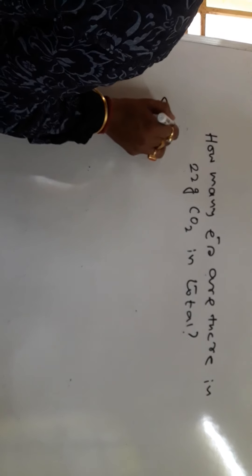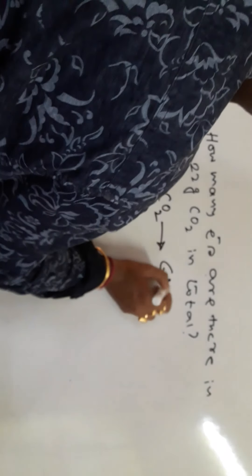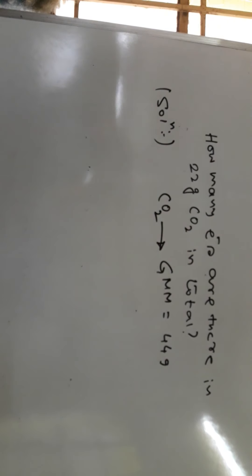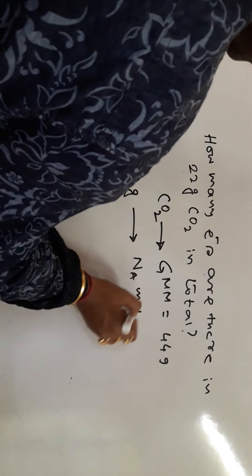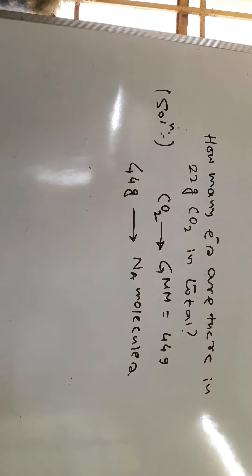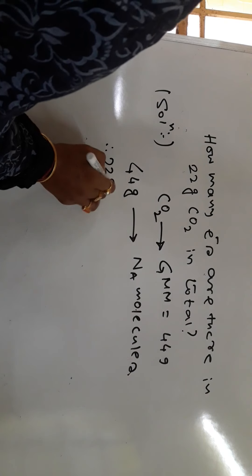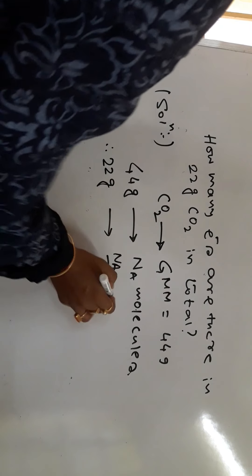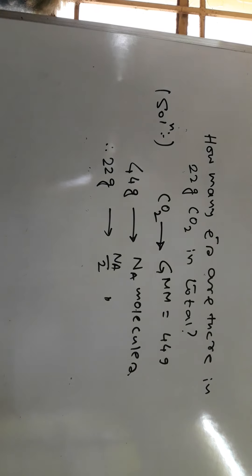Let's see the solution. For CO2, the gram molecular mass (GMM) equals 44 grams. So 44 grams corresponds to NA molecules — the gram molecular mass always corresponds to NA molecules. Therefore, 22 grams will correspond to NA/2 molecules of CO2.